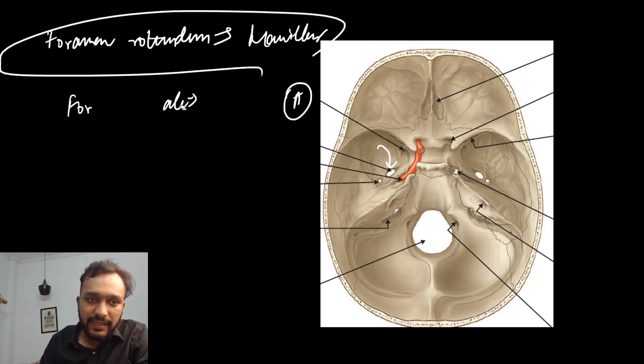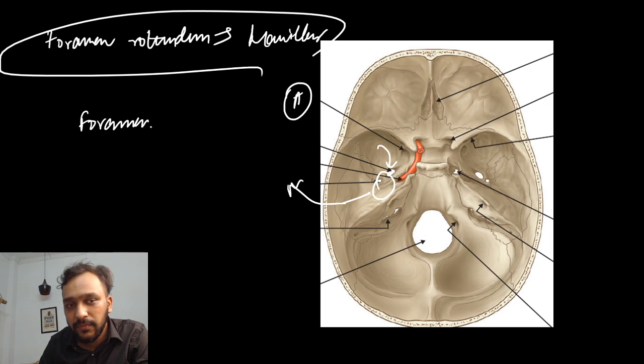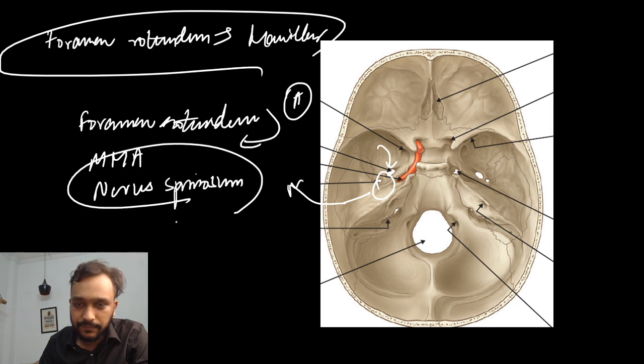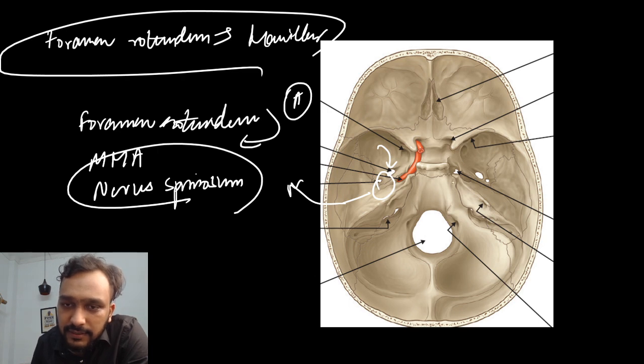Then guys, talking about another foramen that is just passing behind the foramen ovale, this is the foramen spinosum. The structure passing through foramen spinosum is your middle meningeal artery and nervus spinosum.